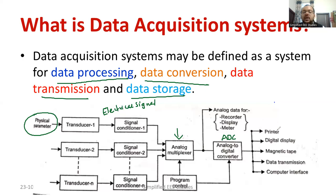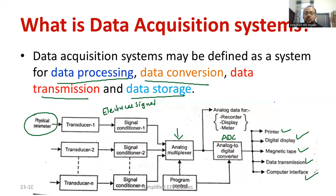If you convert the signal into digital form, there are a lot of advantages. You can take a printout of the information, have a digital display such as a seven-segment display, use magnetic storage like a CD, do data transmission over a certain distance using a communication system, or connect the information with your personal computer. Also, if you require the information in analog form only, you can collect it directly from the multiplexer output for recording, display, metering, etc. The entire system is generally called a data acquisition system.